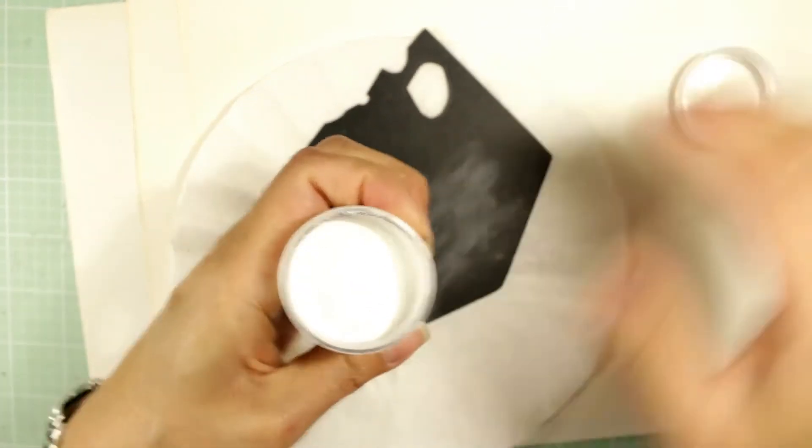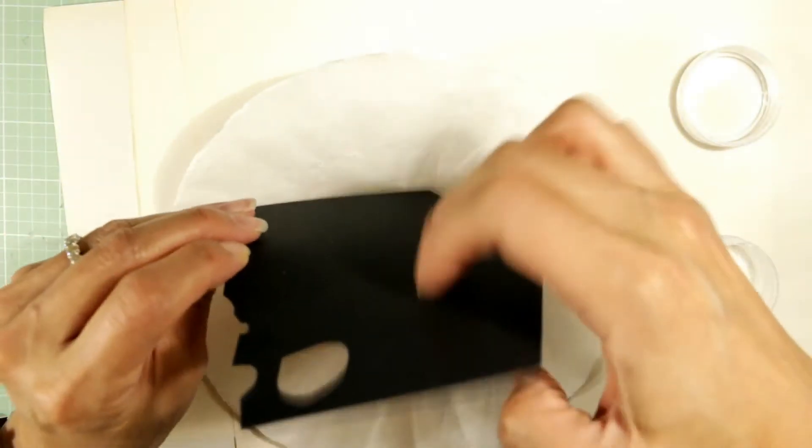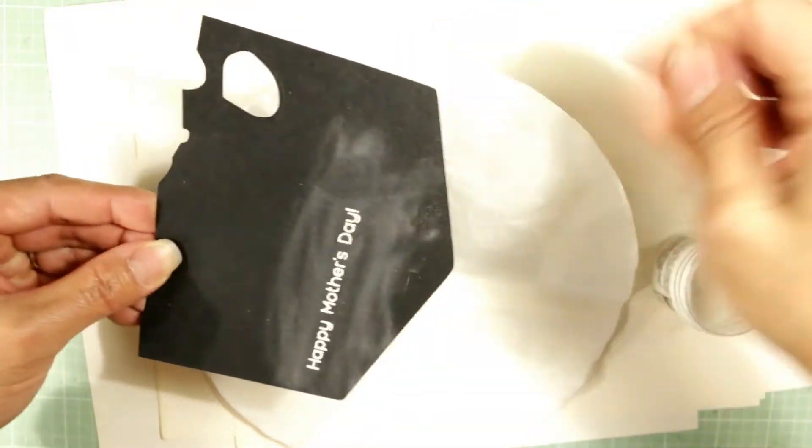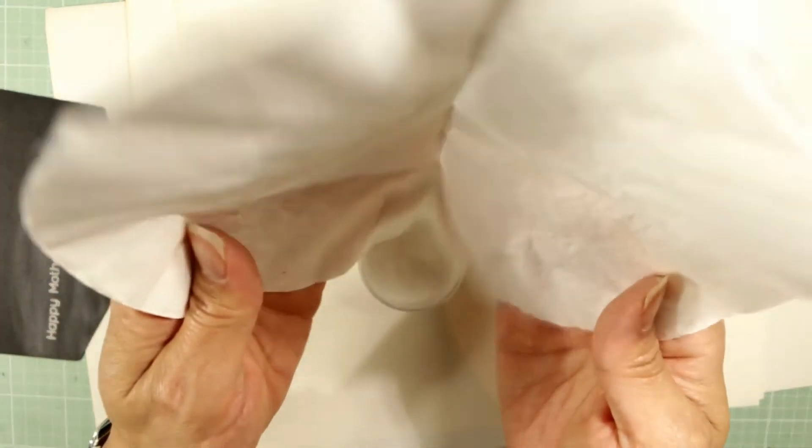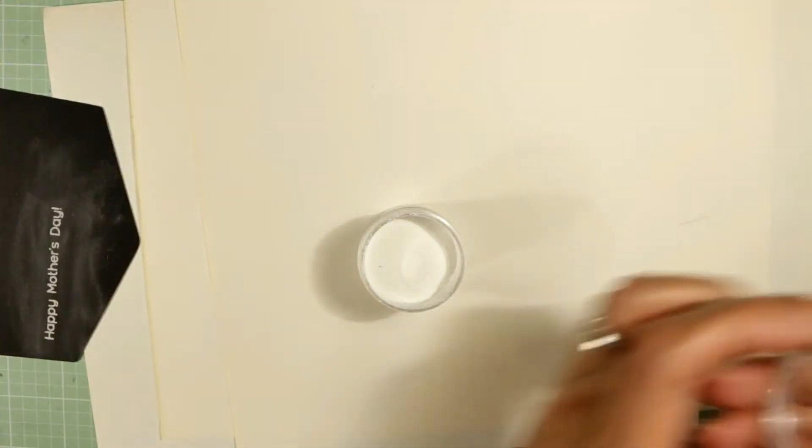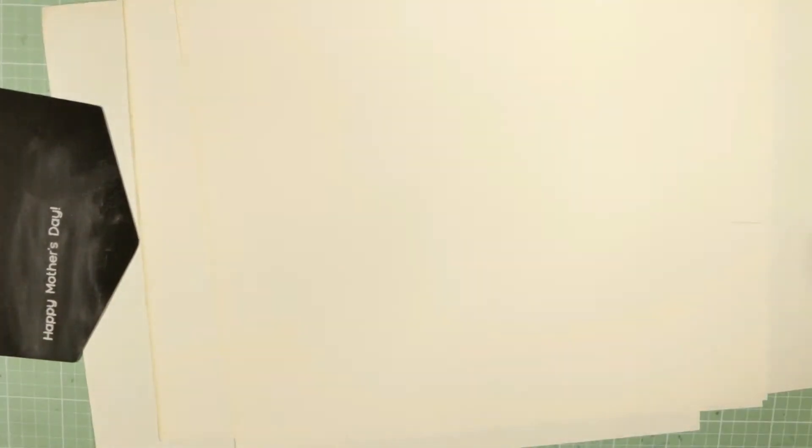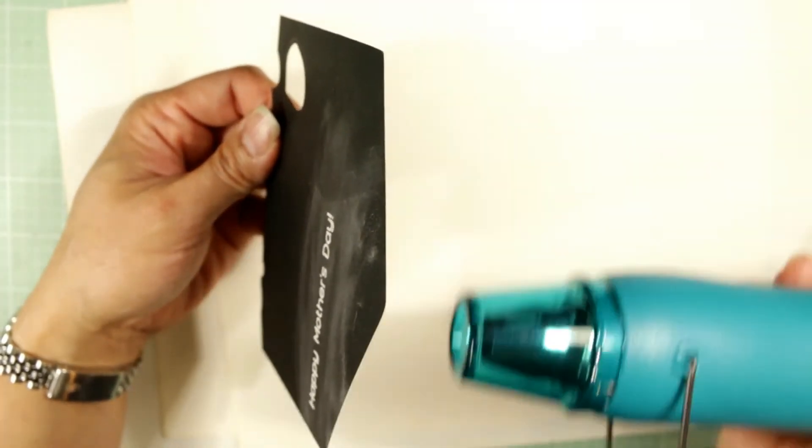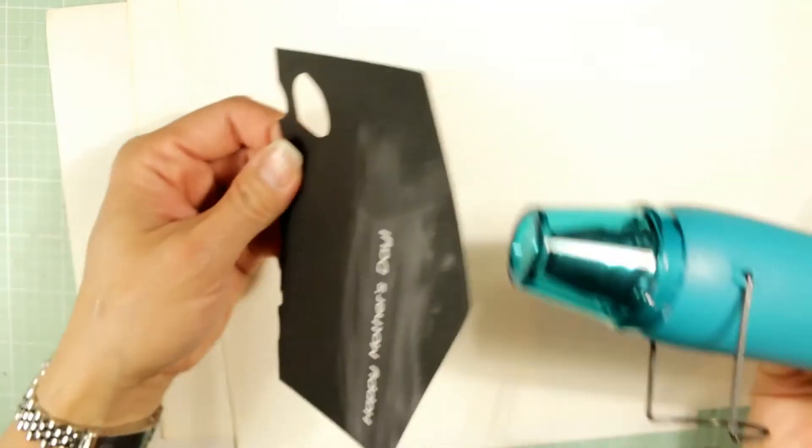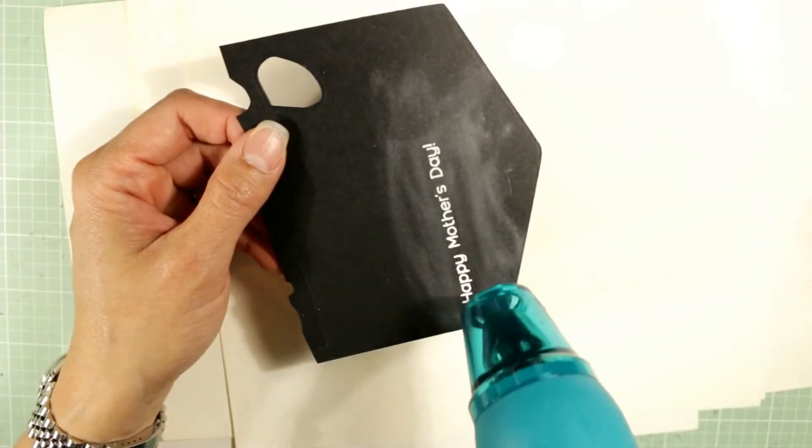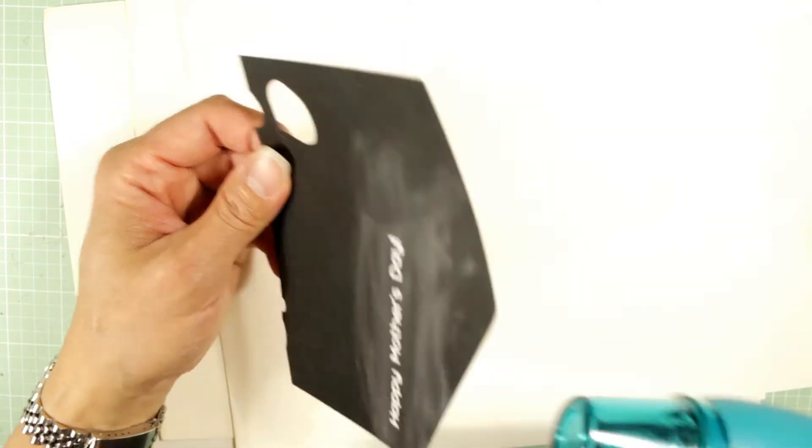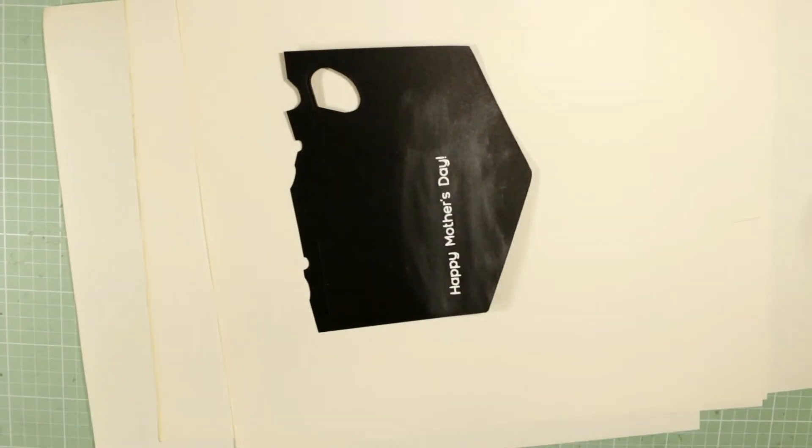I really like using the Super Fine Ranger embossing powder because that seems to get into all the little nooks and crannies without making it too blurry, even for small text like this. Now I'm going to heat the front and the back of this cardstock so that it doesn't warp too much. You can see it melts the embossing powder pretty quickly there.